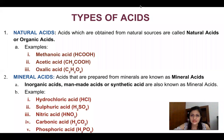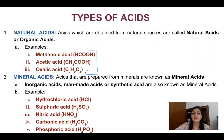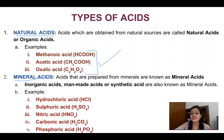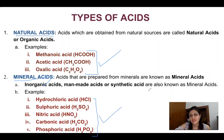Now let's talk about the types of acids. The first type is natural acids, which come from natural sources and don't need to be created — they are already available. These are called organic acids. Examples include methanoic acid, acetic acid, and oxalic acid. The second type is mineral acids, which are man-made and synthetic, prepared in labs. Examples include HCl, H₂SO₄, HNO₃, H₃PO₄, and H₂CO₃.